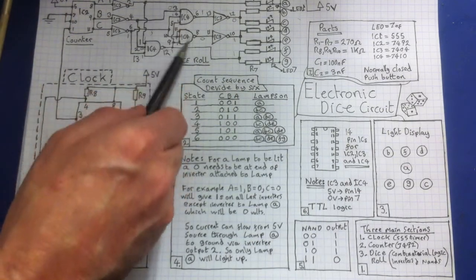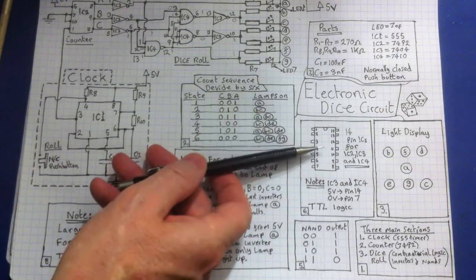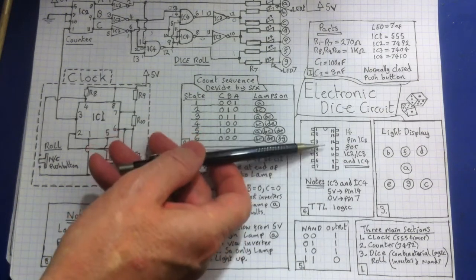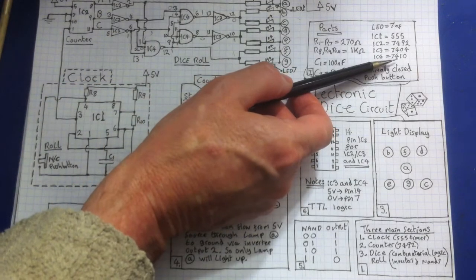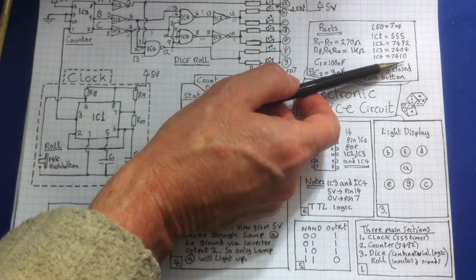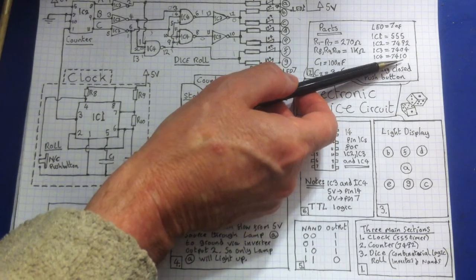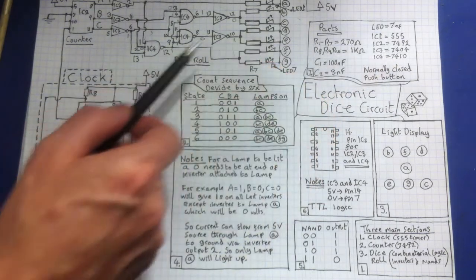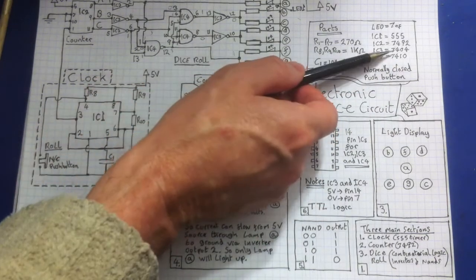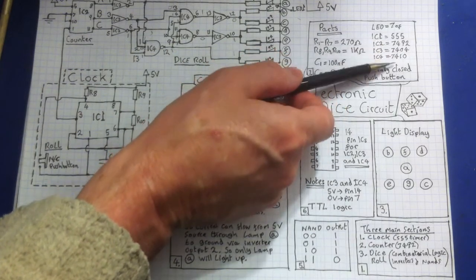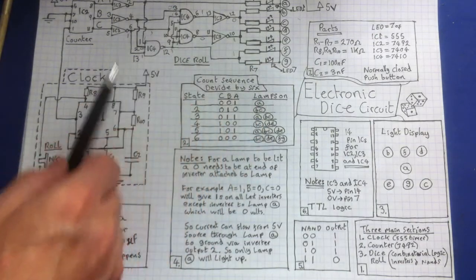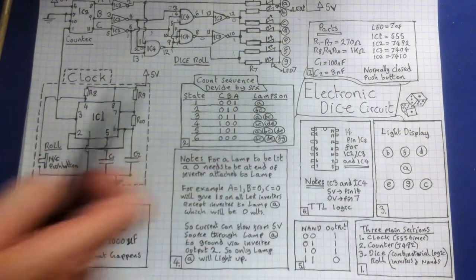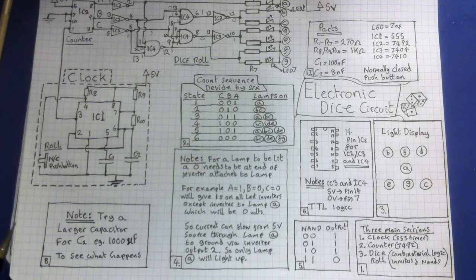These NAND gates, they're all stored inside a 14-pin IC. And that IC is, for the NAND gates, it's a 7410 DIL 14-pin chip. And then for the inverters, the inverters is a 7404. So they're all 7474 series logic, TTL logic chips. So I've written that down here in this little square.